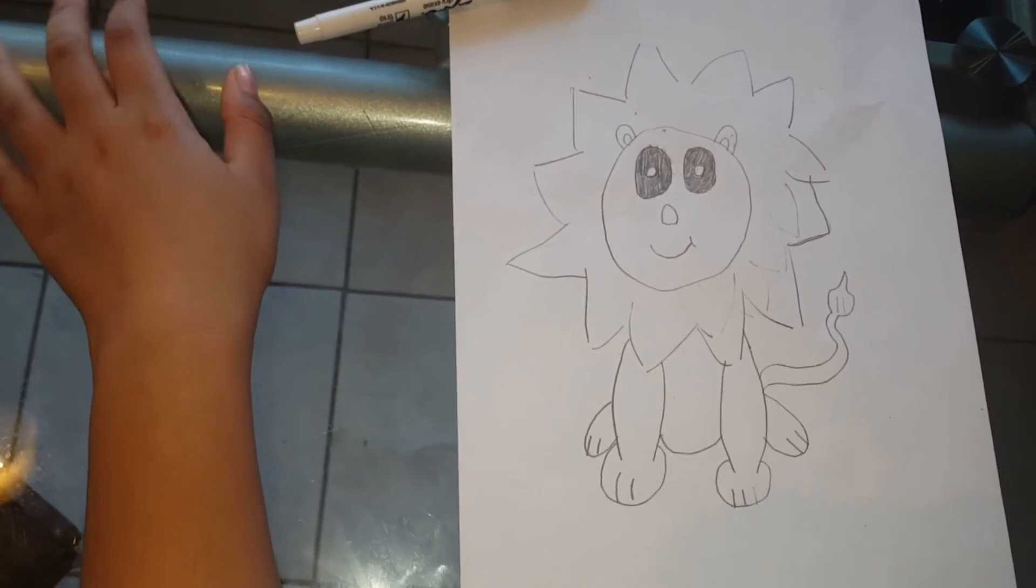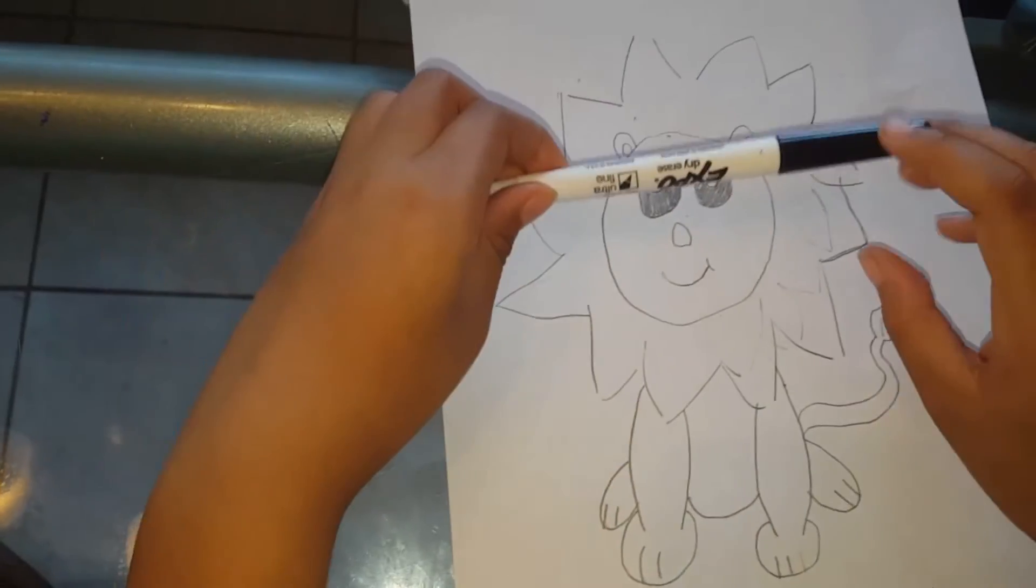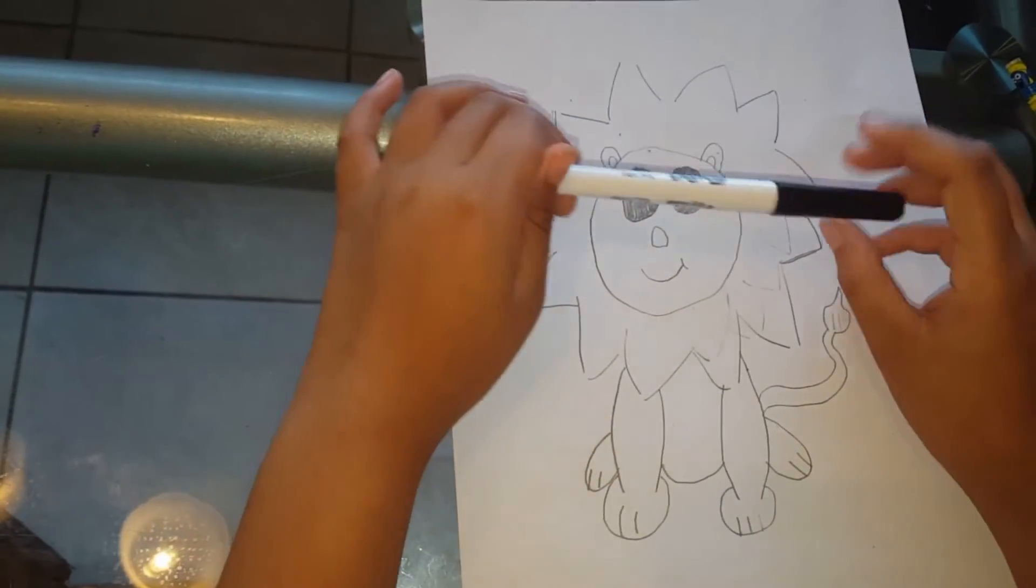When you're done coloring in the eyes, it should look something like this. And you can color or outline it with a marker.